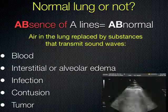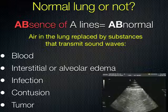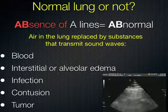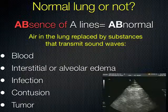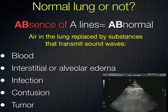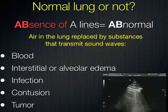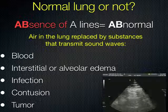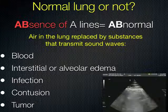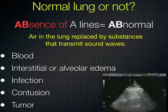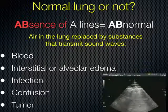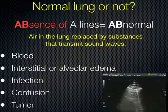Once you've noted whether A lines are present, we move on to B lines. If A lines are absent, something is abnormal — A lines should be present in normally aerated lung. If they are not there, something in the lung has replaced the air. That something can be anything from blood to alveolar edema, infection, contusion, or tumor. These substances will transmit ultrasound waves unlike air.